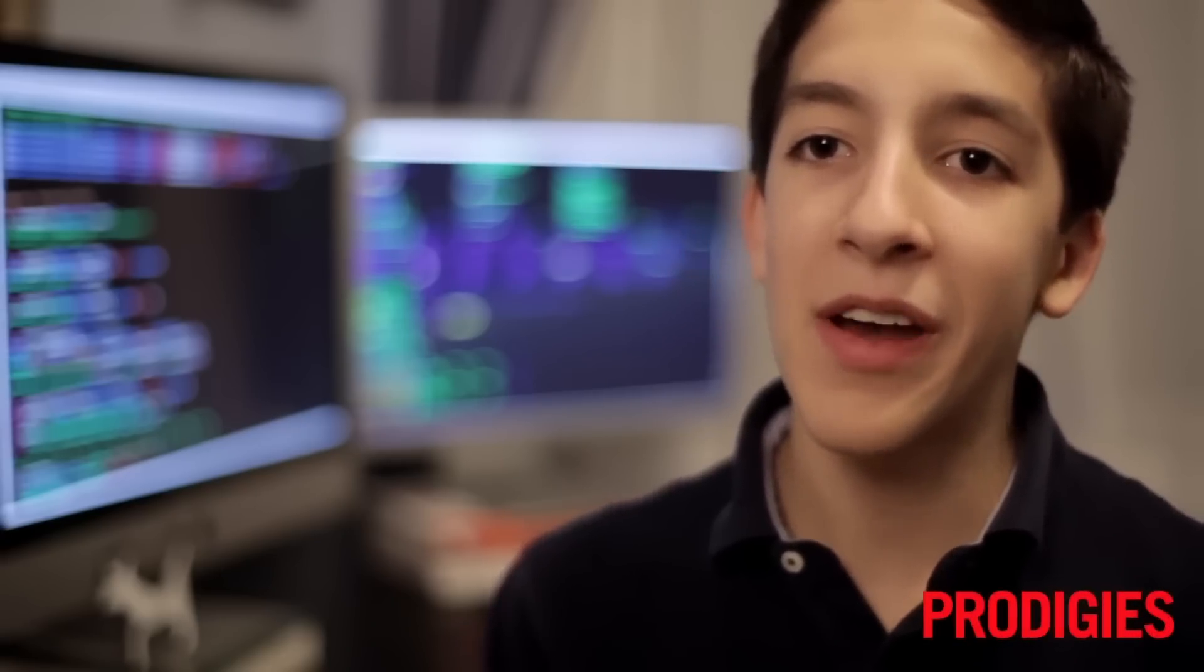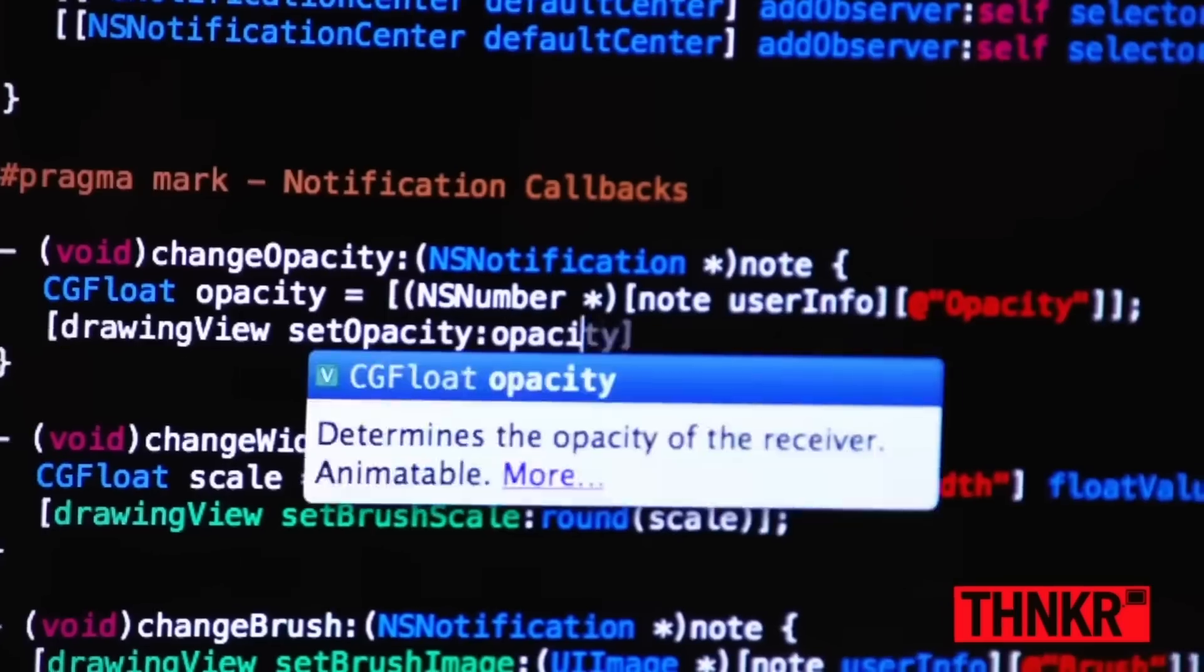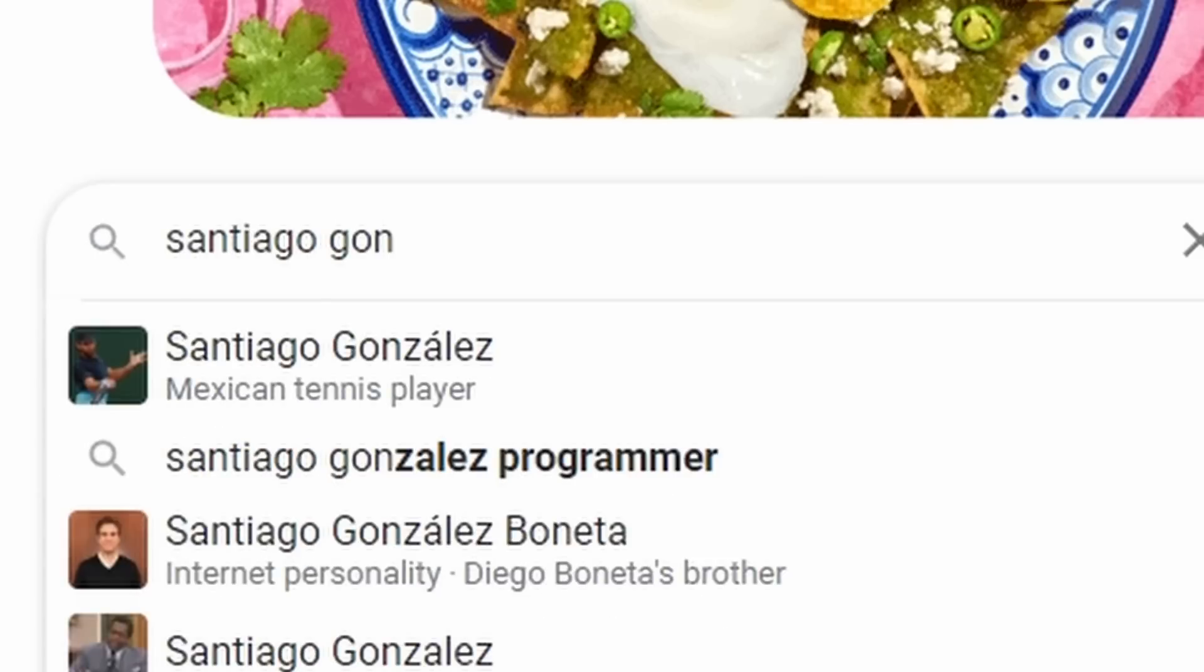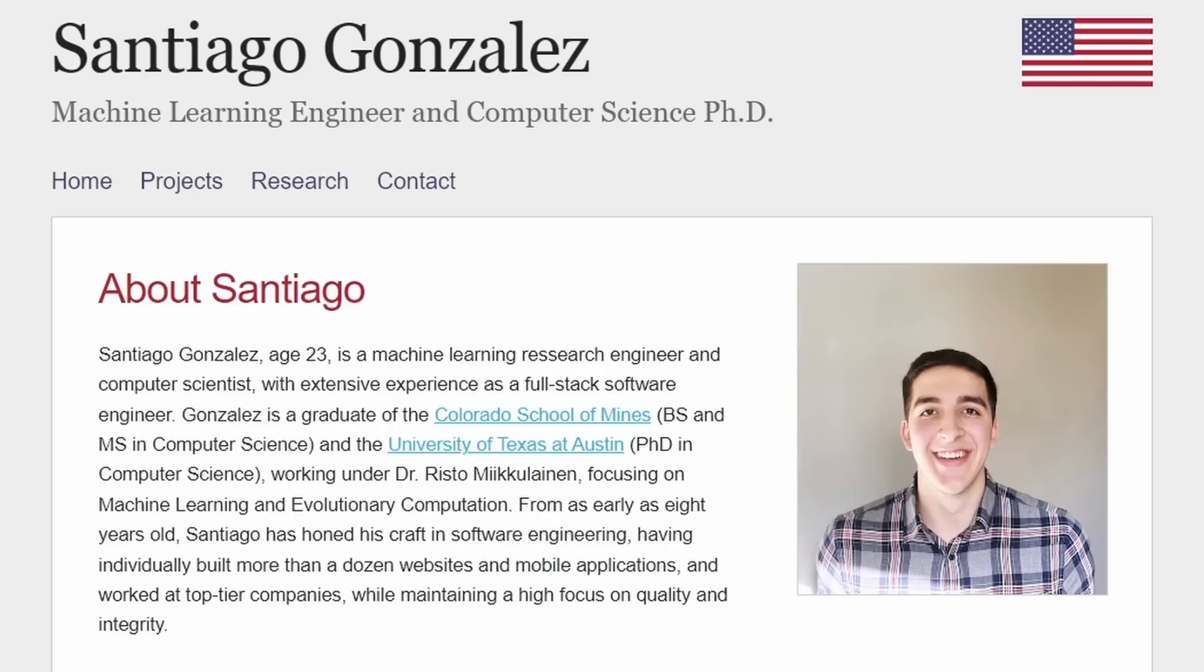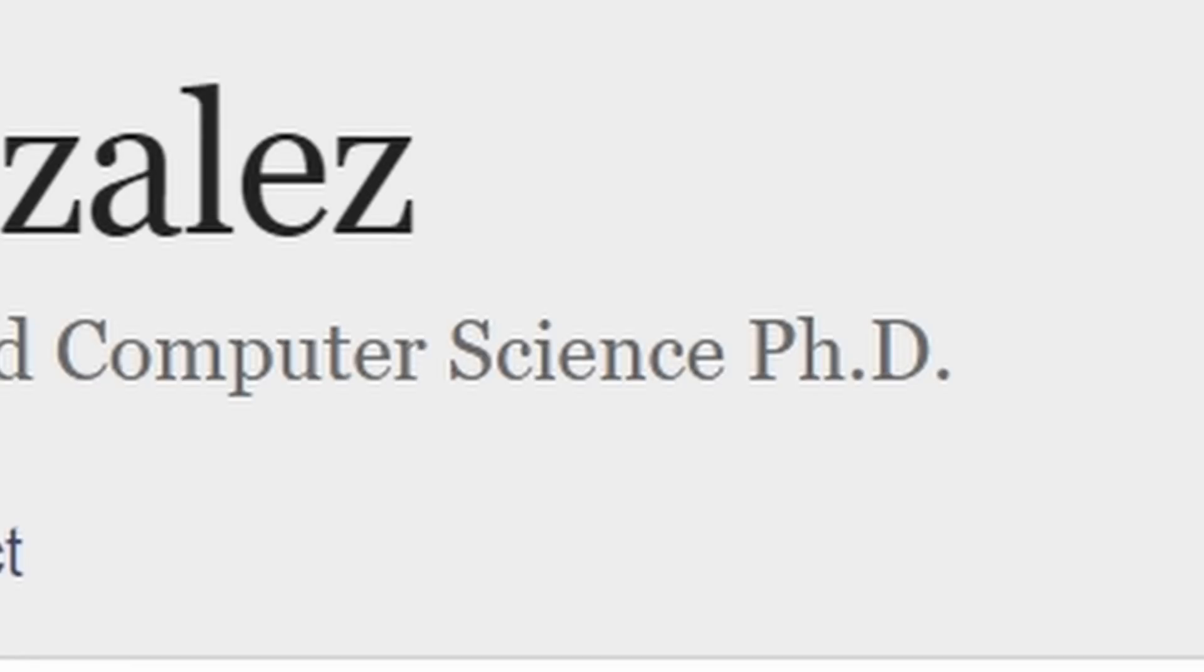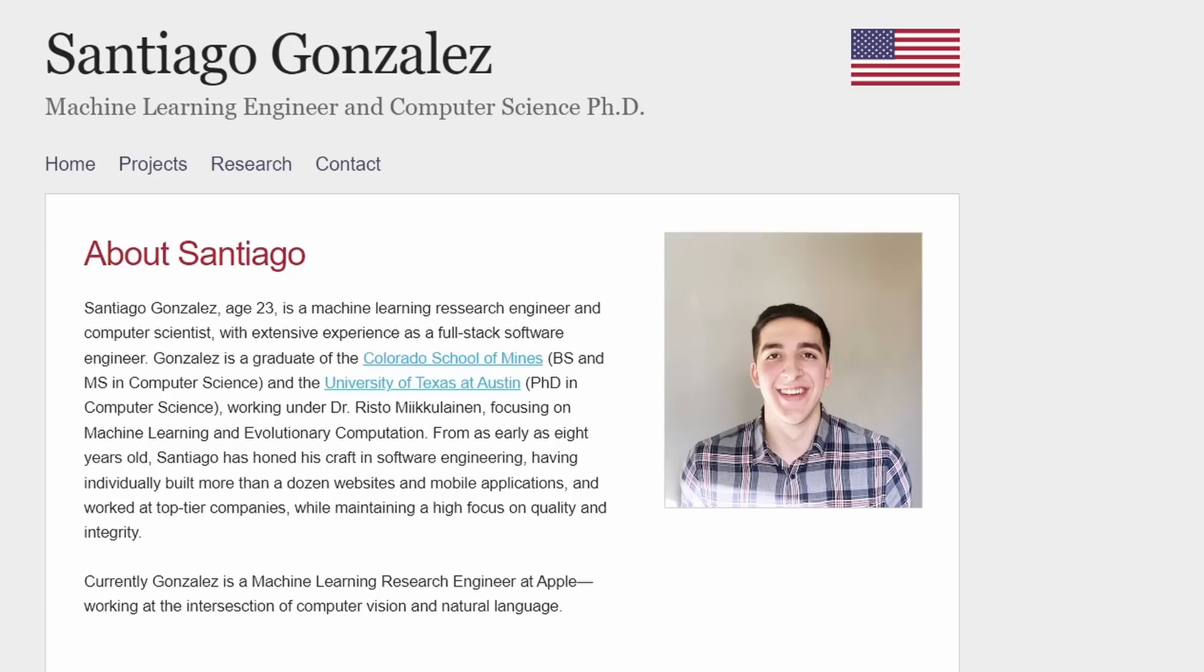Actually, let me find it real quick. Fourteen-year-old genius programmer, this video right here. My name is Santiago Gonzalez, I'm 14 and I love to program. I wonder how he's doing right now. Oh, he has his own website. He's a machine learning engineer and he has a PhD. What? He's 23, he's one year older than me and he has a PhD.